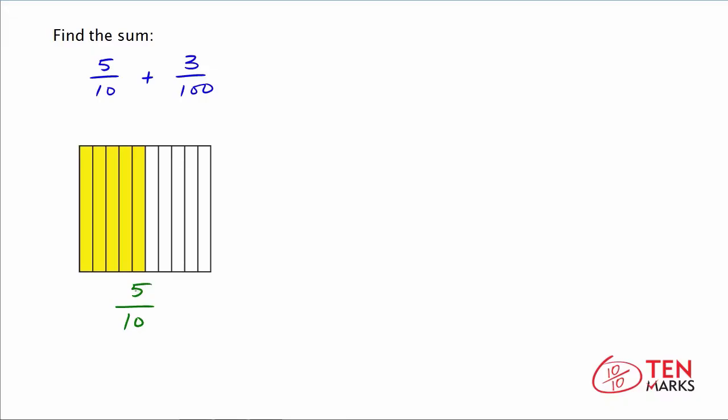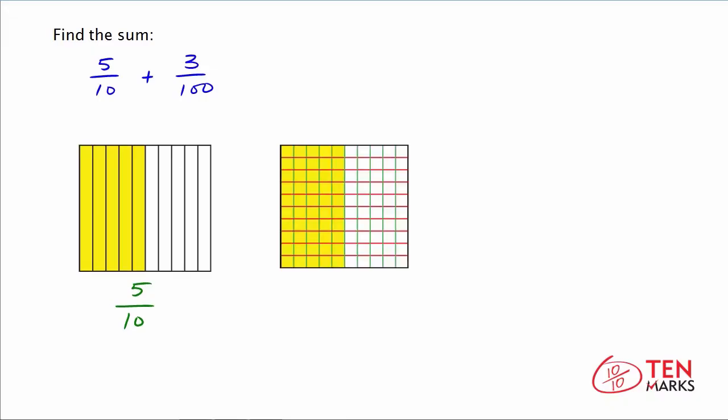Now let's see what this looks like in a hundredths grid. Now if you count the number of yellow squares in this hundredths grid, you'll find that there are 50 squares filled in yellow out of a total of 100. So the equivalent fraction of 5 tenths is 50 one hundredths.